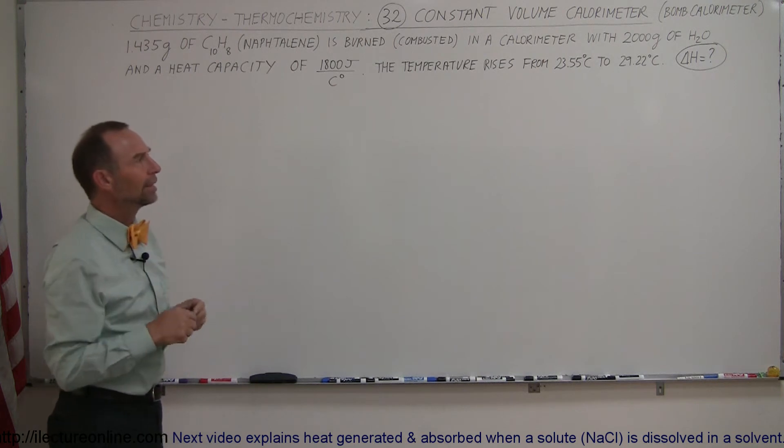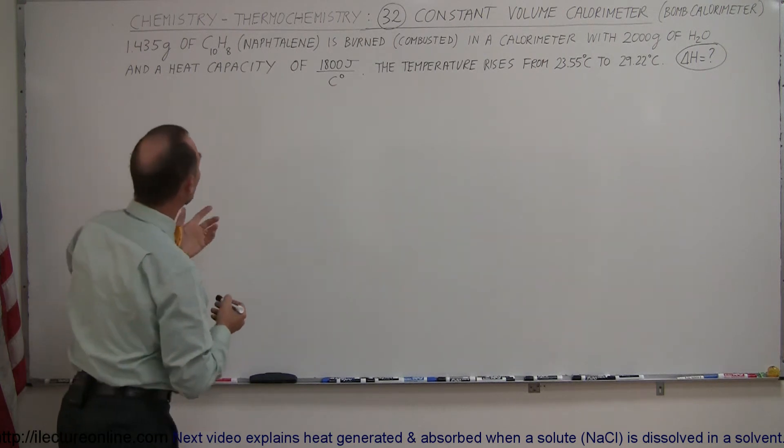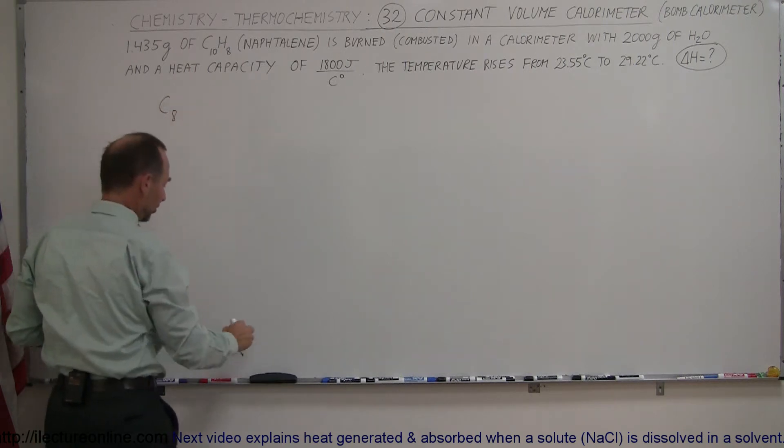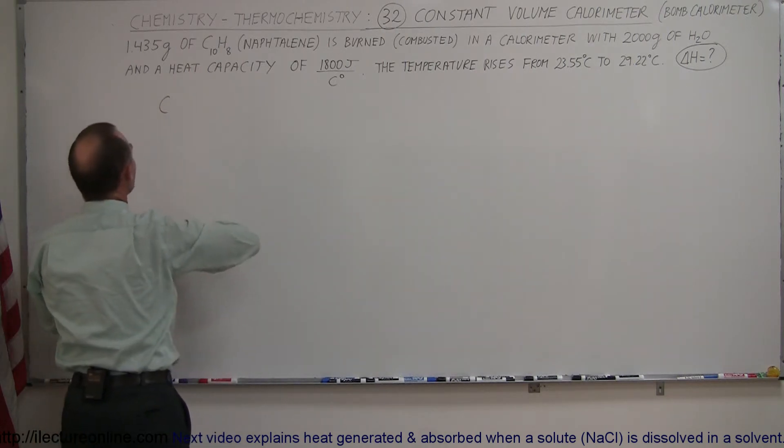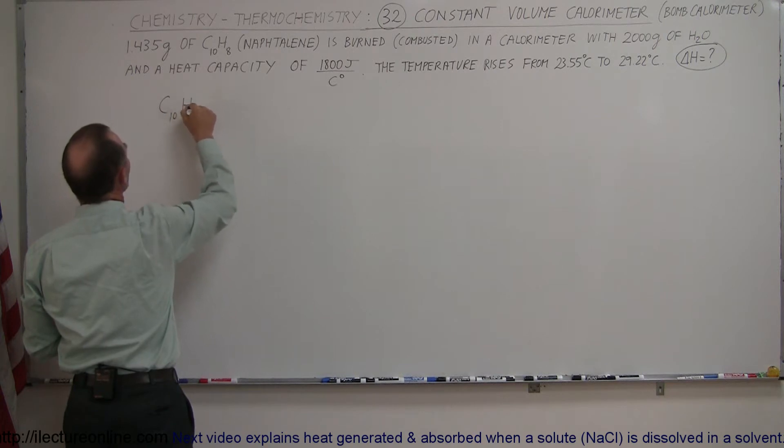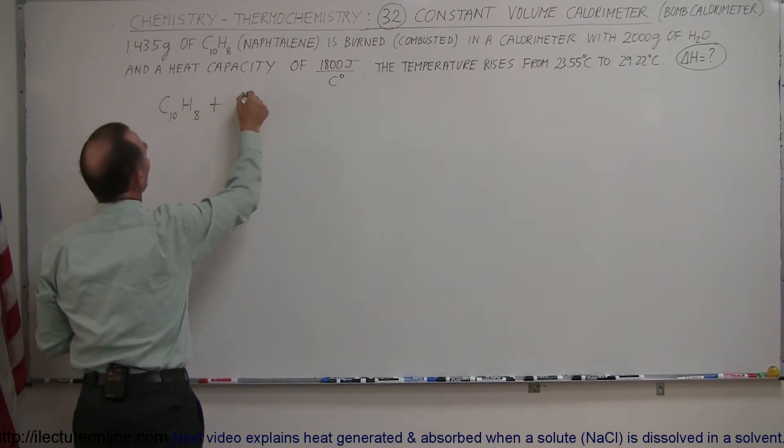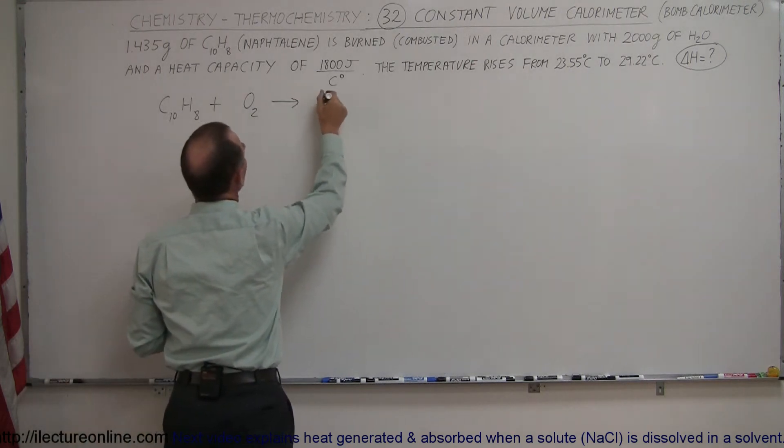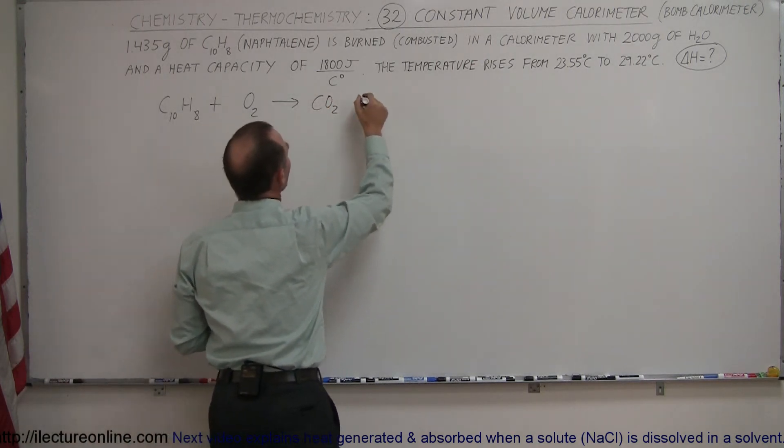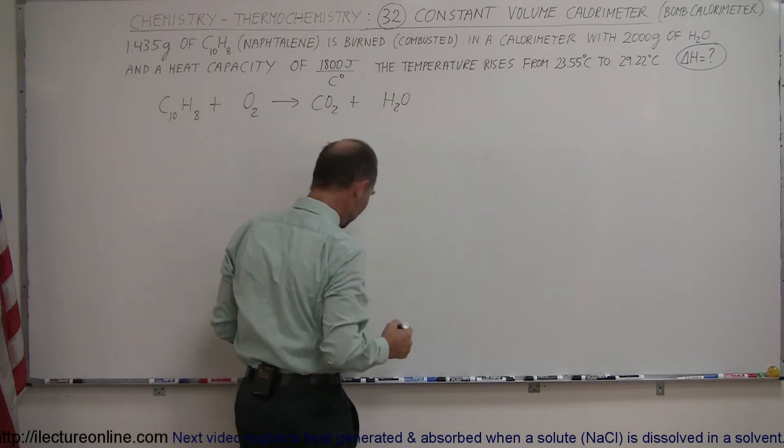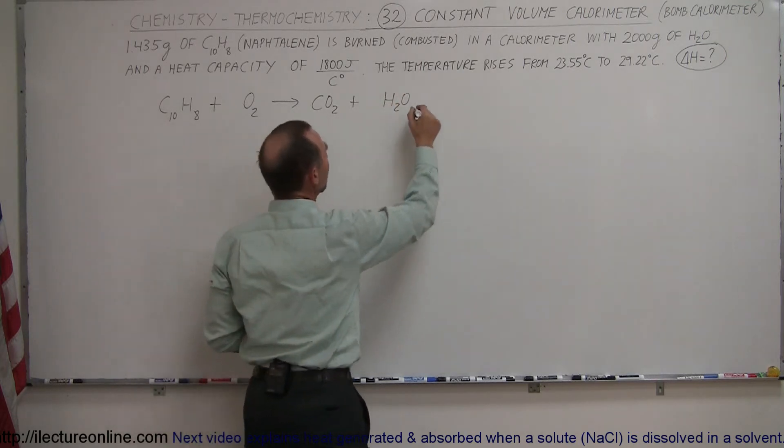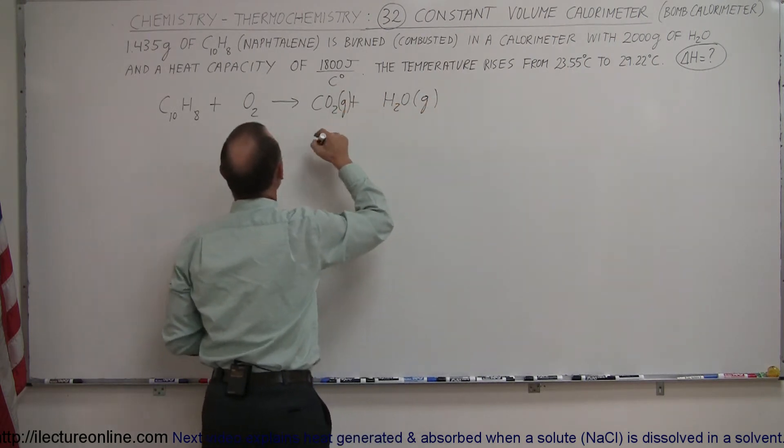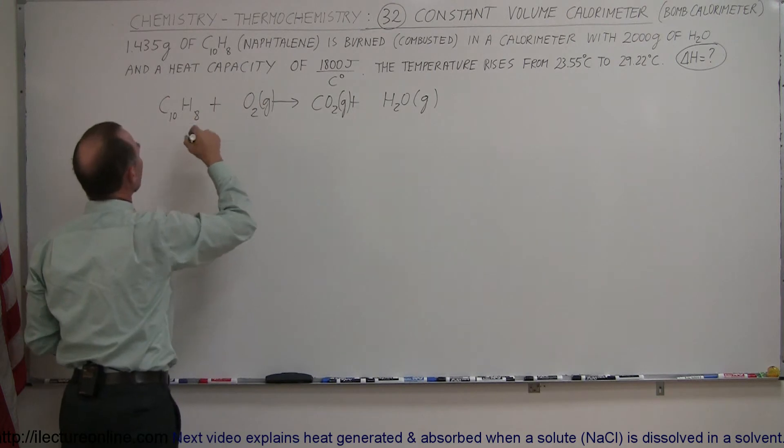Now if you want to write down the equation, we start with naphthalene, C10H8, and we're going to add to that some oxygen, otherwise we can't combust it. The byproduct of that will be carbon dioxide and we're going to have some water. Since we create a lot of heat, this will probably be in a gaseous form. This is a gas, this is a gas, and this would be a liquid.